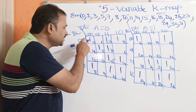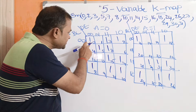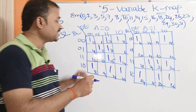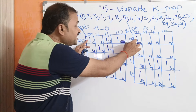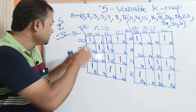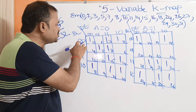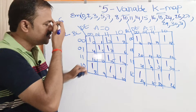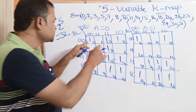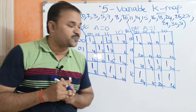Here if we consider the first cell: this cell represents the 0th minterm, and this cell represents the 16th minterm. We can combine these two — they are nothing but adjacent cells. Why? Because the combinations are the same. For the 0th cell, BC value is 0,0 and DE value is 0,0. For the 16th cell, BC value is also 0,0 and DE value is 0,0. So we can combine these two adjacent cells into a group.